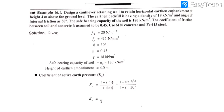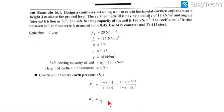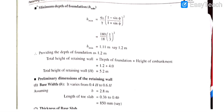First, we will calculate the coefficient of active earth pressure Ka. The formula is Ka = (1 − sin φ) / (1 + sin φ), which you have all studied in geotechnical engineering. With φ = 30°, we get Ka = 1/3.